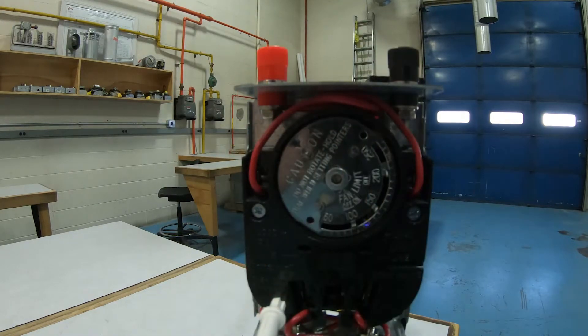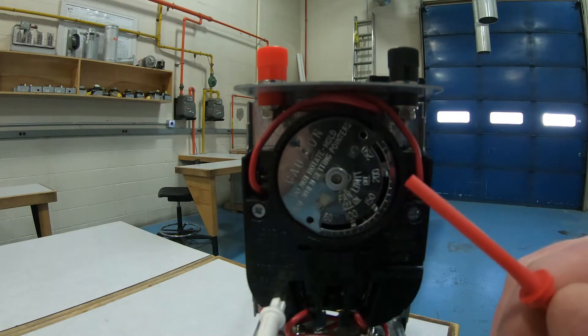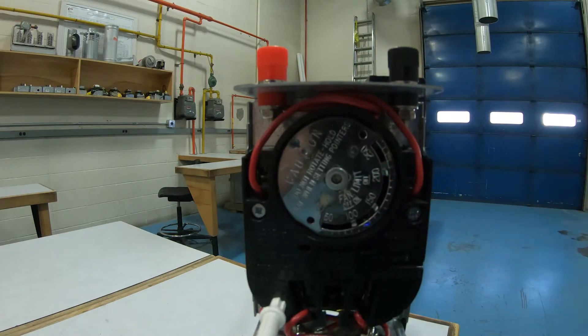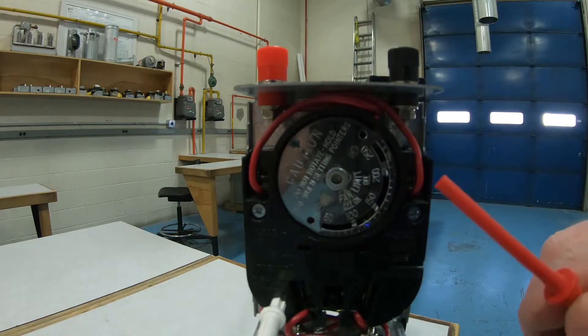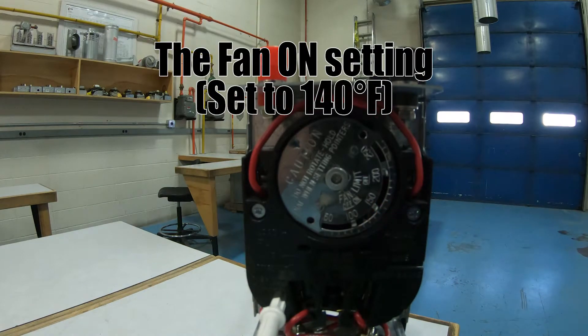So we have three typical settings on a combination fan limit. The fan off is the first little tab here, the fan on is the second tab, and the high limit setting. Now let's talk about this in order of operation. What's going to happen? Furnace is off and all of a sudden the thermostat says hey, the house is getting cold, furnace turn on. So main burner starts up. Nothing's happening right now except for the heat exchanger is heating up, and eventually it'll get up to, in this case, 140 degrees Fahrenheit, and all of a sudden the fan will click on.